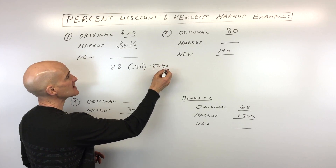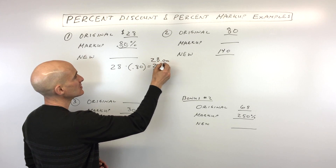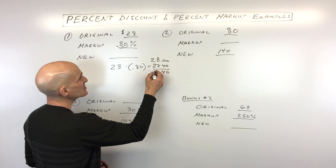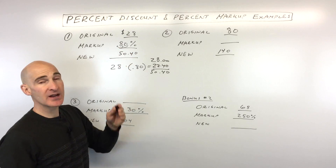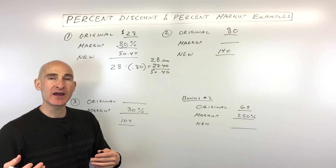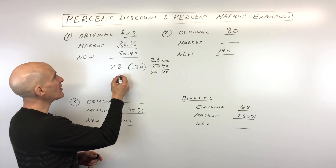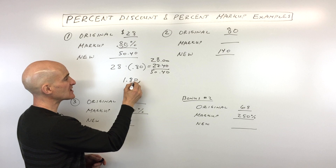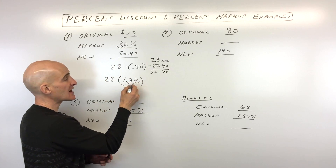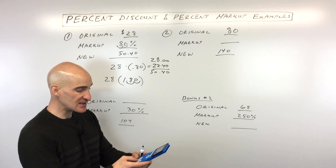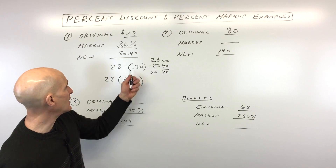Since $22.40 is the additional amount, add it to the original $28, giving us a new price of $50.40. Method two: if marked up by 80%, the customer pays 180% — the original 100% plus an additional 80%. So $28 times 1.80 also equals $50.40, the same answer.